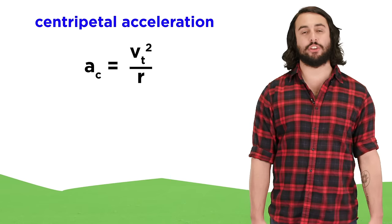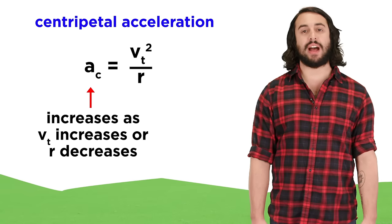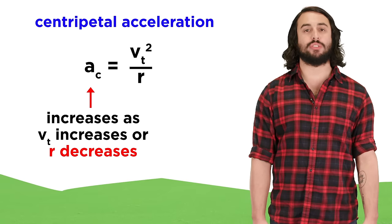Centripetal acceleration is given by tangential speed squared over the radius of the path, so this value would increase if the car were to move faster and if it were to sit closer to the center.